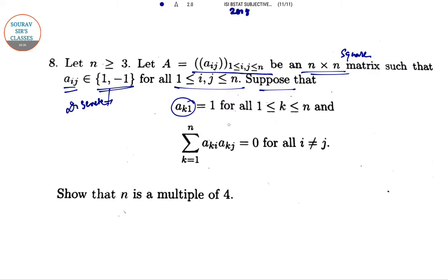Suppose that a_k1 is equal to 1 where 1 to k and summation a_ki a_kj equal to 0 where i not equal to j. Show that n is a multiple of 4.